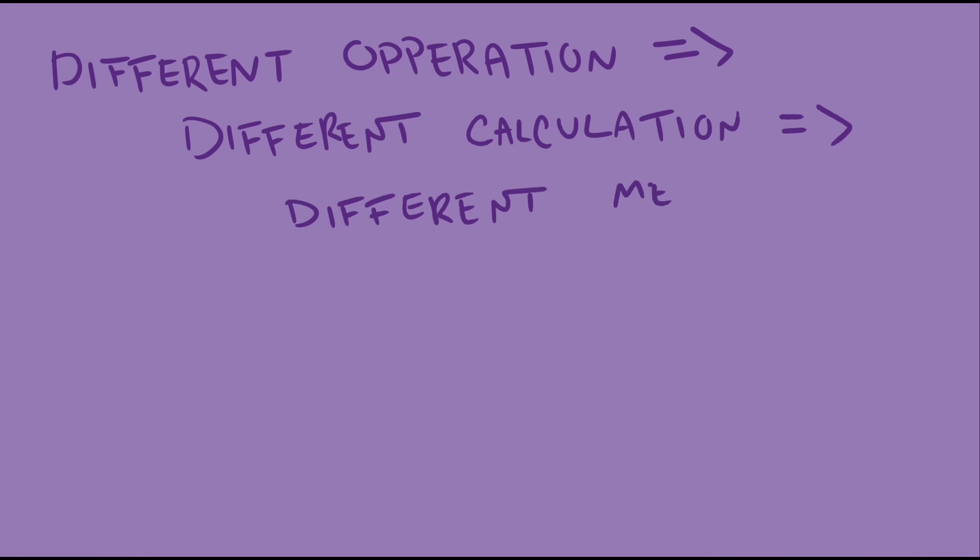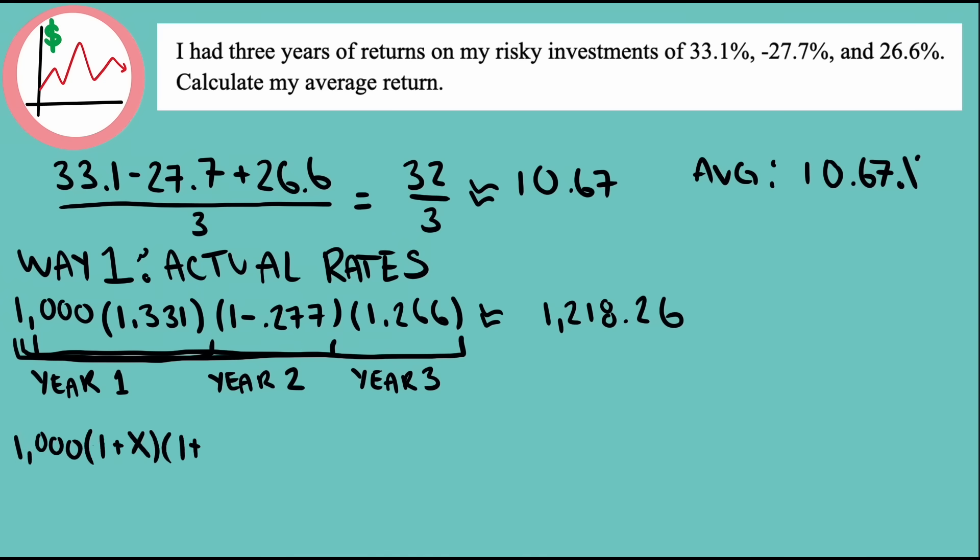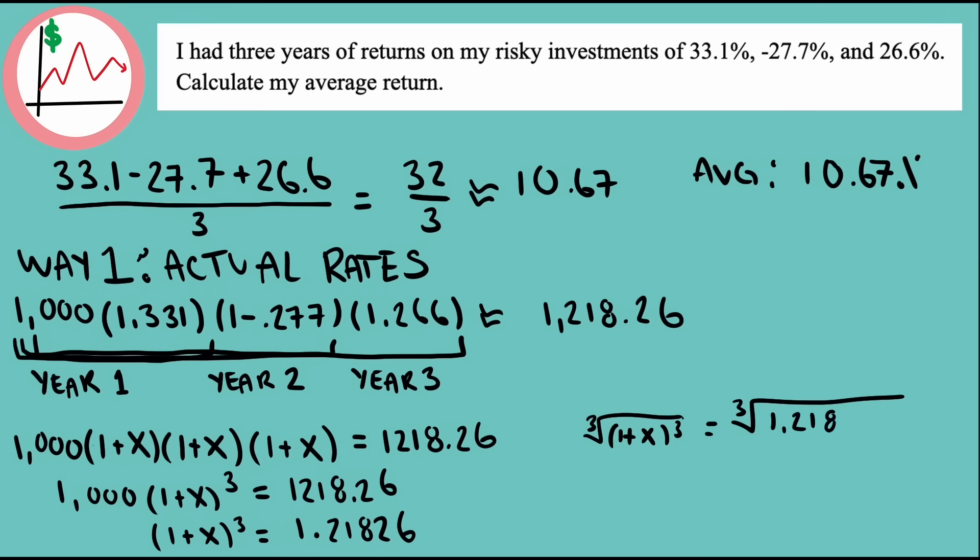Let's take our expression to calculate our total earnings and replace our different percentage values with a single unknown value, and then solve for that unknown value. We find that the yearly growth rate that would earn us the same amount would be about 6.8%, so it makes sense to call that the mean in this context.